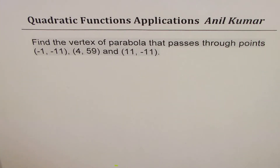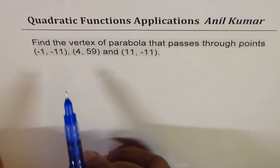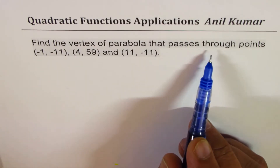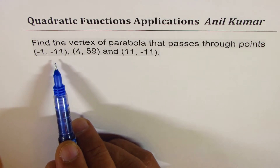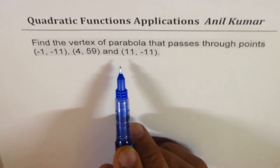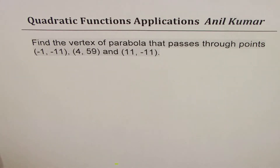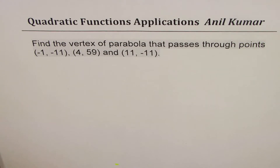I'm Anil Kumar, sharing with you a question from my student, a grade 10 student, Shruti. Thanks a lot for sharing this question and also your comments. She is looking forward for a simpler solution as the solution provided at school was too complicated. The question is: find the vertex of a parabola that passes through points (-1, -11), (4, 59), and (11, -11). I'll give you alternate methods of solving this question and you may have to decide which one suits you best.